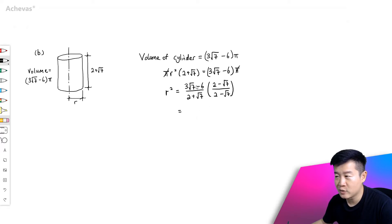So for the numerator, it will be this multiplied by this, which gives me 6√7. This multiplied by this will give me -3 times √7 times √7, which will give me 7. Then this times this, -12. This times this gives me +6√7.